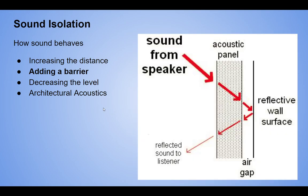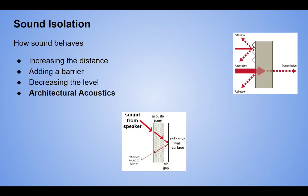Adding acoustic panels on one side of a barrier makes one room quieter, but the maximum you can get from absorption on one side is: in the source space, decrease the level by 6 dB maximum; in the receiving space, 3 dB maximum. It's a trick you can use, but if you have a loud mechanical room, putting a bunch of acoustic foam on the wall will not fix that.